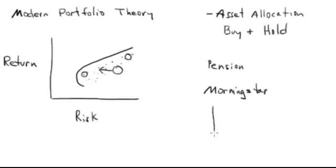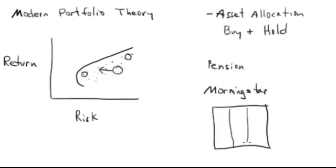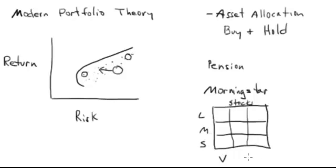Morningstar created the style box — nine boxes within a box. They have one for fixed income bonds and one for stocks. For the equity style box, you have large-cap, mid-cap, and small-cap companies on one axis, and then value, blend, and growth on the other axis. The blend category is kind of ambiguous — it doesn't make a lot of sense.